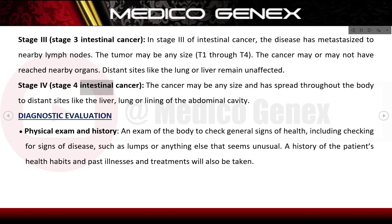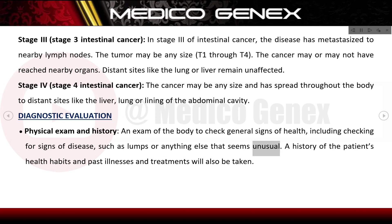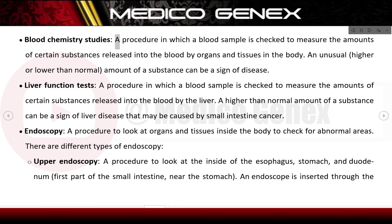Stage 4: the cancer may be any size and has spread throughout the body to distant sites like the liver, lung, or lining of the abdominal cavity. Diagnostic evaluation includes a physical exam and history — an exam of the body to check general signs of health, including signs of disease such as lumps or anything unusual. A history of the patient's health habits and past illnesses is also taken. Blood chemistry studies check a blood sample to measure amounts of certain substances released by organs and tissues; an unusual amount can be a sign of disease.